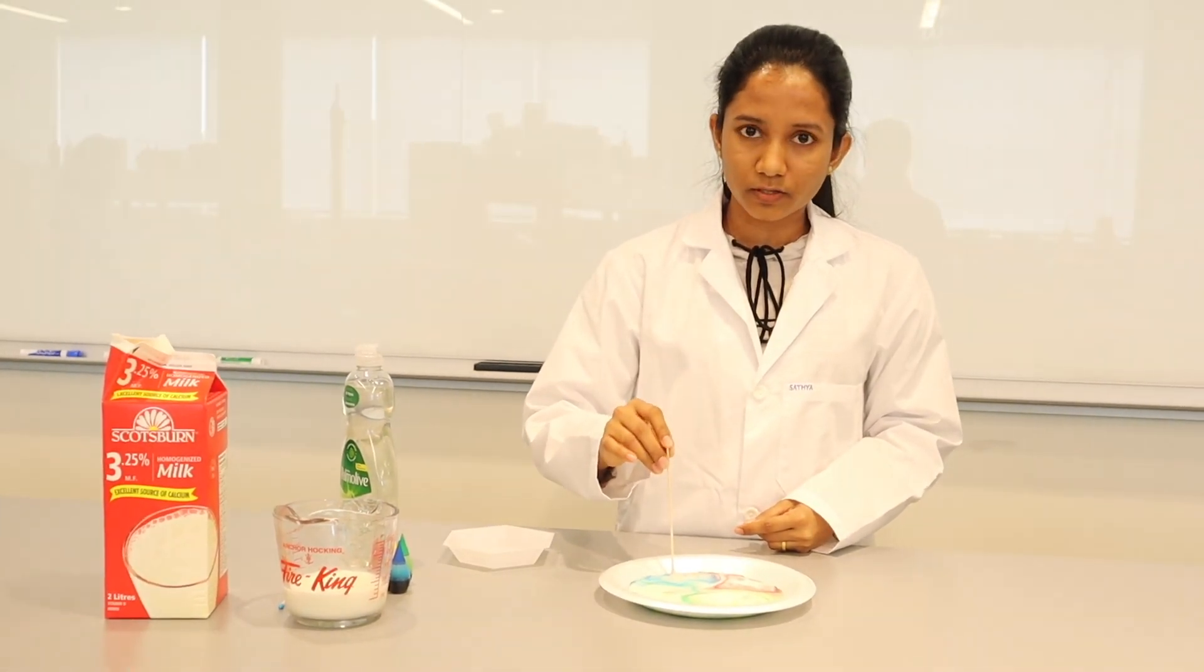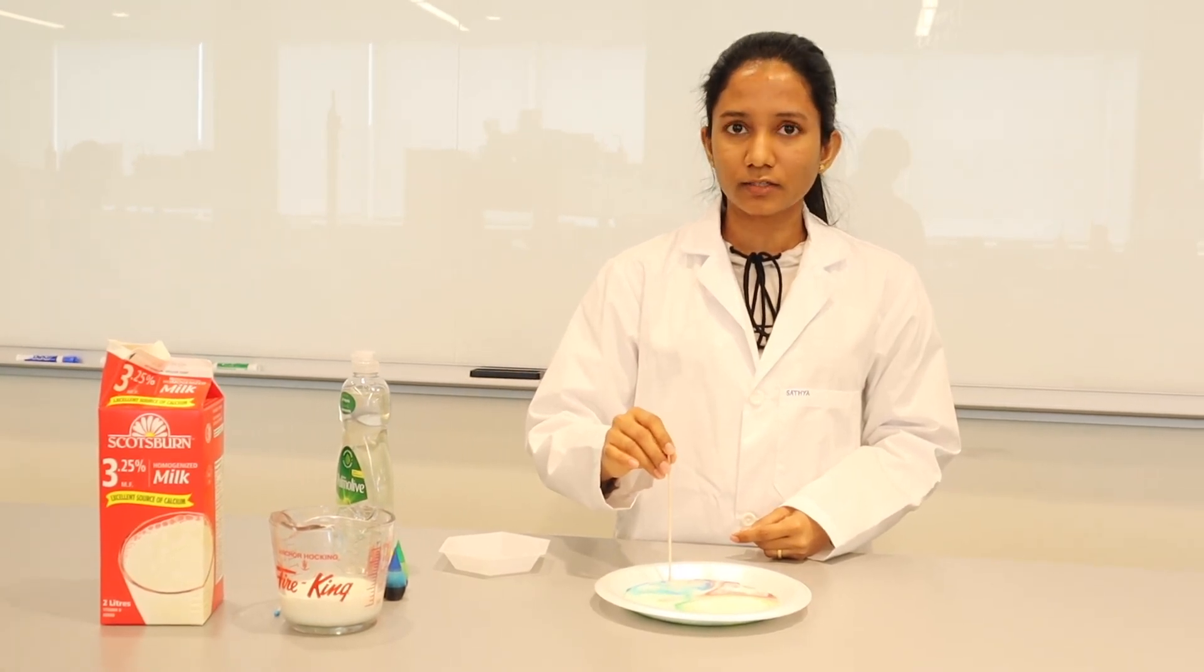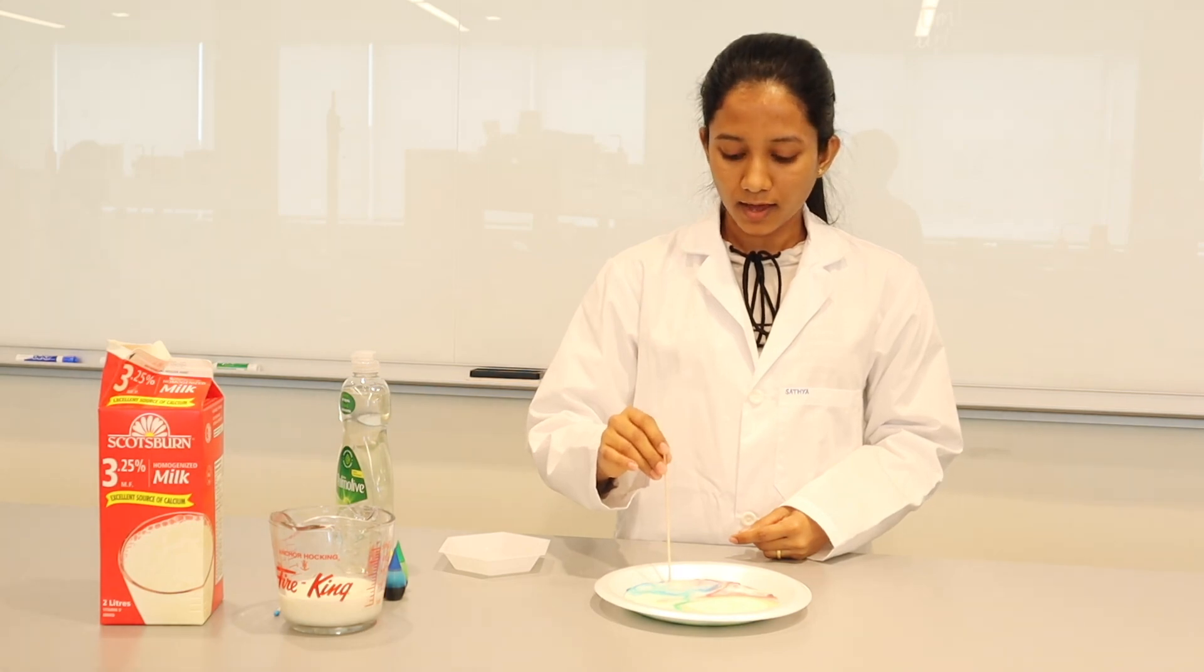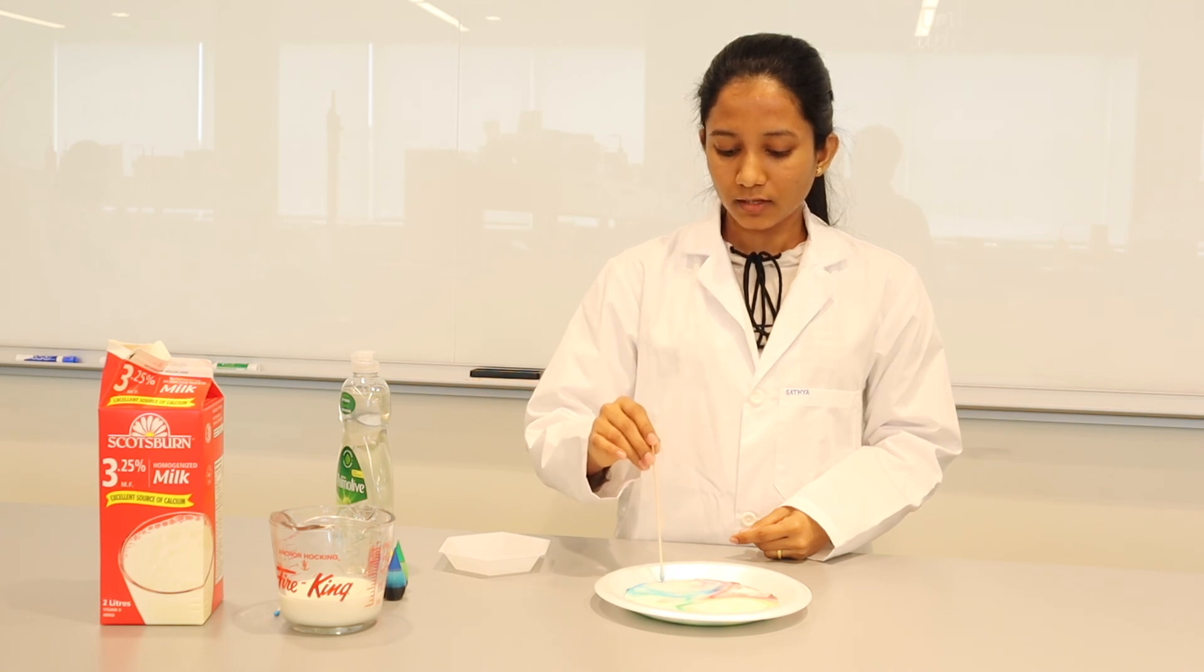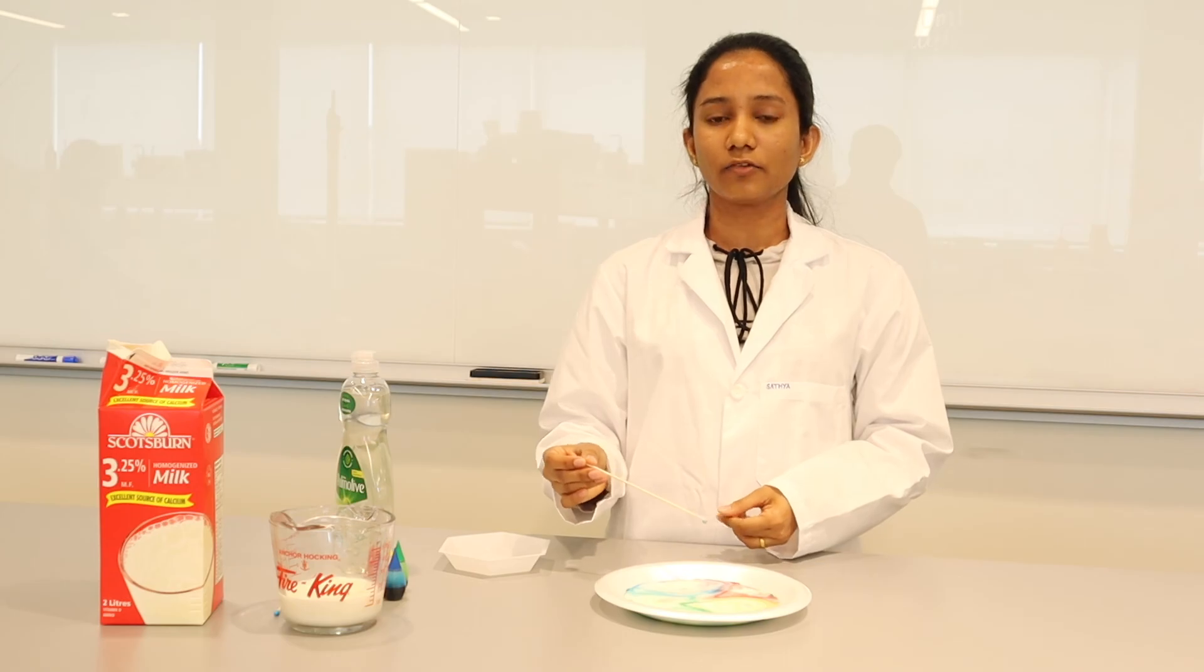So dishwasher soap creates micelles by facing the non-polar tails into the middle of the micelle and polar head towards the outer surface of the micelle, and carries the fatty component of the milk in the middle of the micelle.